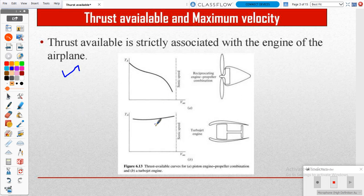In this slide I showed two figures. The first one is a reciprocating engine based propulsion. In this curve, the vertical axis is TA - thrust available - and the horizontal axis is V infinity, meaning velocity.